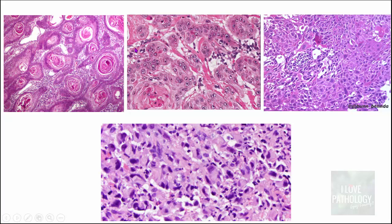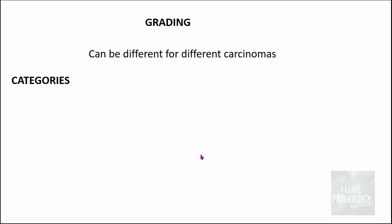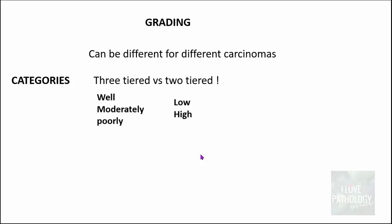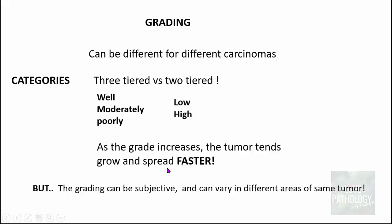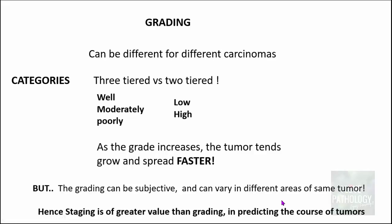Only a few squamous pearls are seen in moderately differentiated carcinoma. In poorly differentiated carcinoma we don't see any of those, whereas in undifferentiated carcinoma it is actually difficult to make out that it has squamous cell origin. Grading can be different for different carcinomas. It can be 4-tiered (G1–G4), 3-tiered (well, moderately, poorly differentiated), or 2-tiered (simply low grade and high grade). Importantly, as the grade increases the tumor tends to grow and spread faster, but grading can be subjective and can vary in different areas of the same tumor. That is why staging is of greater value than grading in predicting the course of tumors.